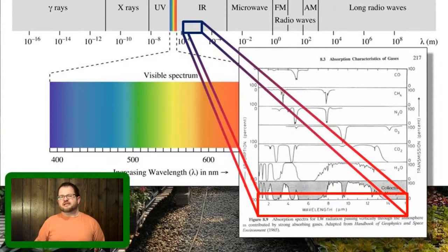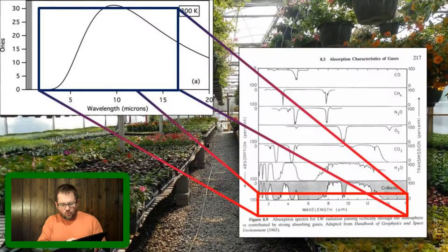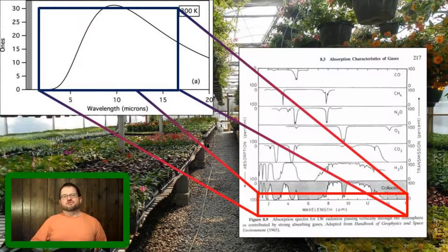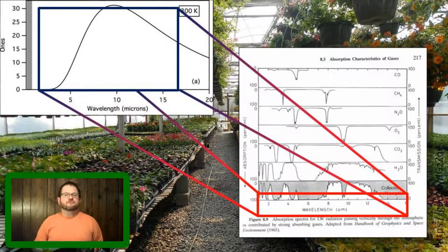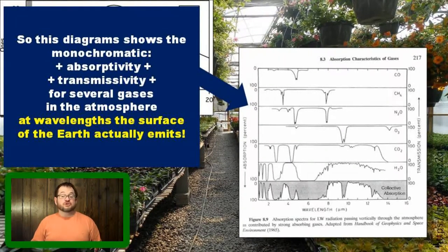Why did the person who designed this figure choose that little range of wavelengths? If I show you the curve for the amount of radiation emitted by an object of about 300 Kelvin, the range of about 1 to 16 microns is pretty much the bulk of the radiation that such an object actually emits. The average temperature of the surface of the Earth is 288 Kelvin — a fairly typical temperature — so this diagram is illustrating wavelengths typical of what the Earth's surface emits: long-wave or terrestrial radiation.